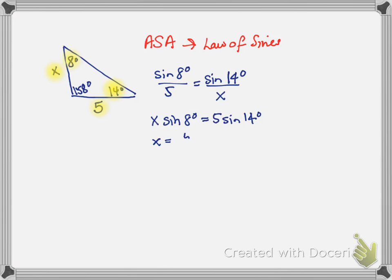Isolating X, I get 5 times sine of 14 degrees over sine of 8 degrees. And therefore, when you plug that into your calculator, make sure you're on degrees, and when you do that, I get 8.69 miles.